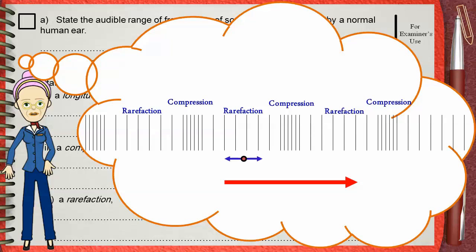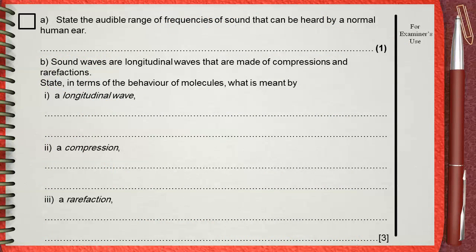So, to answer the first question, the audible range of frequencies are from 20 Hz to 20,000 Hz.